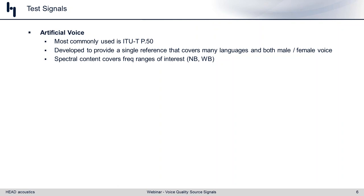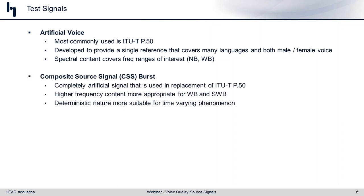When we perform an FFT of the P.50 signal, we have enough frequency content to appropriately stress narrowband and wideband devices. However, there's nothing here for super wideband or full band. The second signal is the composite source signal or CSS burst, also standardized in ITU-T P.50.